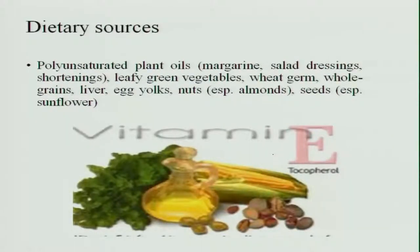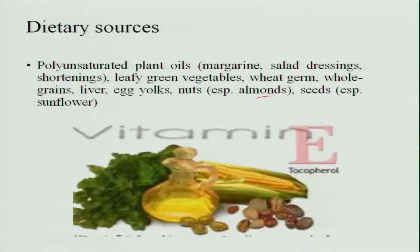The dietary sources of vitamin E include all polyunsaturated plant oils, leafy vegetables, wheat germ, whole grains, liver, egg yolk, nuts — especially almonds — and seeds, especially sunflower seeds. These are rich sources of vitamin E.